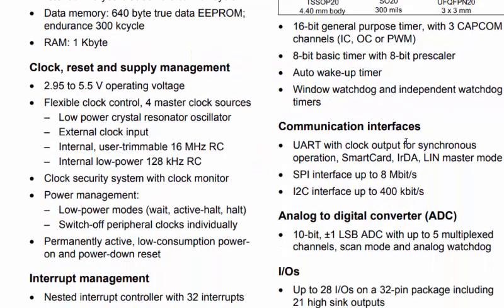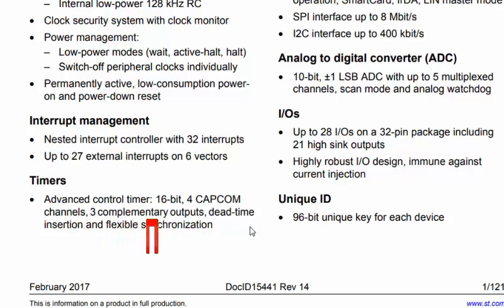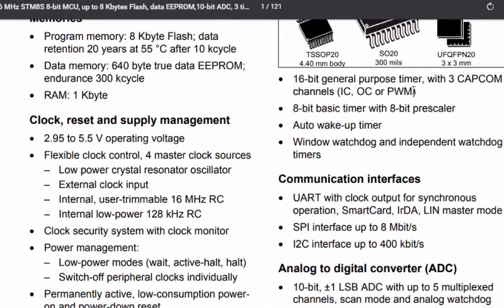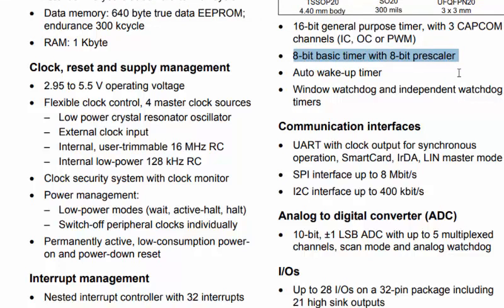In the timer section of the datasheet, we see an advanced control timer (16-bit) with capture/compare channels and complementary outputs — useful for three-phase motor control or sine wave inverter applications. The second timer is a 16-bit general purpose timer for compare/capture and PWM applications. The one we are using is the 8-bit basic timer with 8-bit prescaler, which helps create accurate delays instead of using a software delay with a for loop.